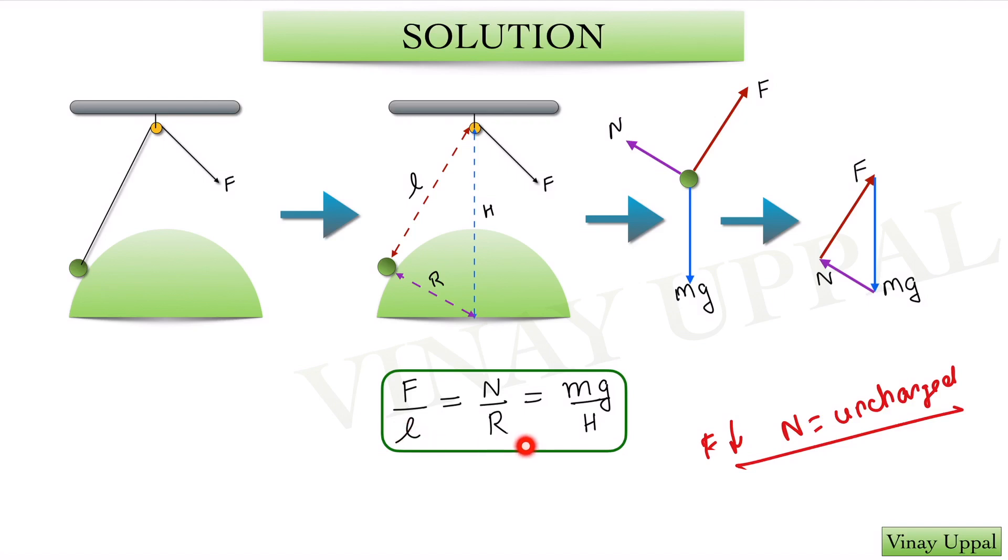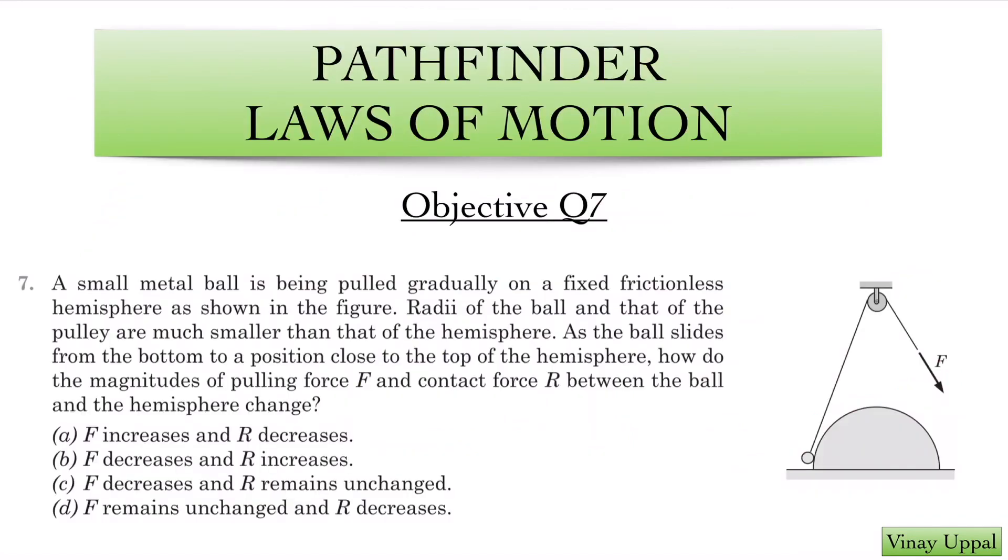And I have simply written the relation for all the three forces compared to the lengths. So if I just go back to my question, force will decrease. And the normal force, which is denoted by R here and I use N, that remains unchanged. So very simple zero calculation solution using the concept of vectors.